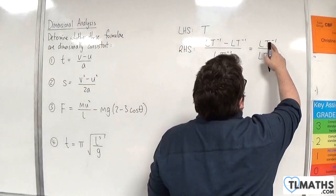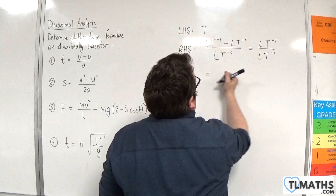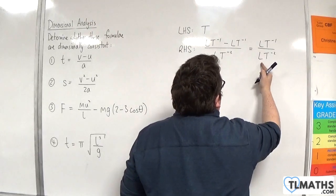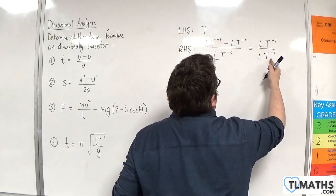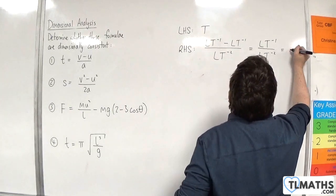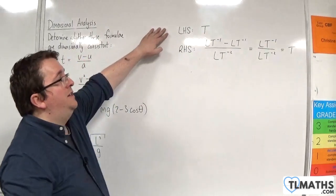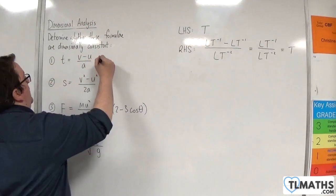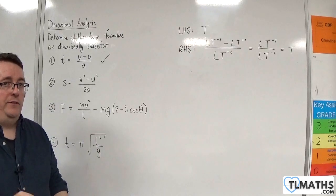A velocity take away a velocity is of course still a velocity — LT⁻¹. So now we have velocity over acceleration: LT⁻¹ divided by LT⁻². The L's cancel, and T⁻¹ divided by T⁻² is just T. The left-hand side is a time, the right-hand side is a time, so yes — the first formula is dimensionally consistent.